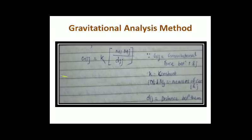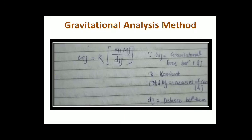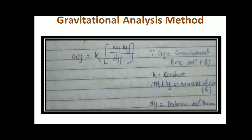The next method is the gravitational analysis method. Let's say there are two places i and j, and the gravitational force can be calculated between these two places using the formula: G-ij equals k multiplied by (Mi × Mj) divided by Dij. Here Mi is the mass of place i, Mj is the mass of place j, Dij is the distance between the two places, and k is a constant. By using this gravitational analysis method, we can find out the gravitational or attraction factor between two regions. However, this method has a loophole — the calculation or measuring of Mi, Mj, and Dij is quite difficult, and there can be confusion regarding the parameters i, j, k, and the constant.